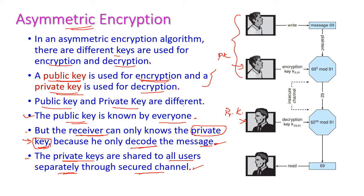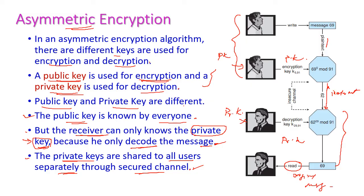On the sender side, the sender uses the public key (PK) to encrypt the plain text, and the resulting ciphertext is transmitted through the internet. On the receiver side, the receiver uses their own private key to decrypt the message and gets back the original message.